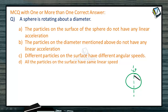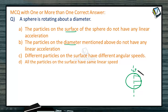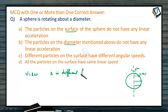The particles on the diameter and those on the surface have different characteristics. Different particles on the surface have different linear speeds. When rotating, the tangential acceleration is zero, and v = rω — since r is different for different points on the surface, all particles do not have the same linear speed. So option A is wrong.